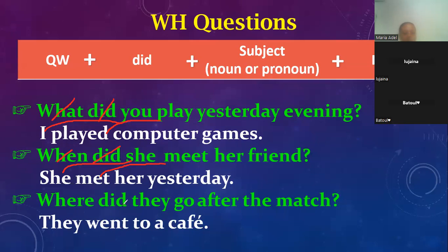The last example: 'Where did they go after the match?' We remove 'where' and 'did'. They — 'go' turns to 'went' in the past form. 'They went to a cafe.' Is there a problem? No. Great.